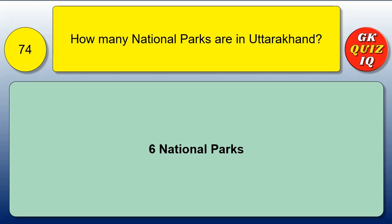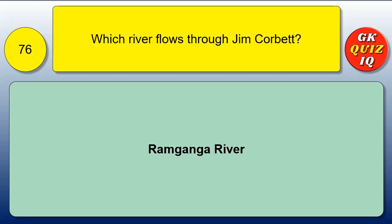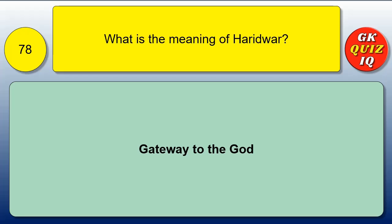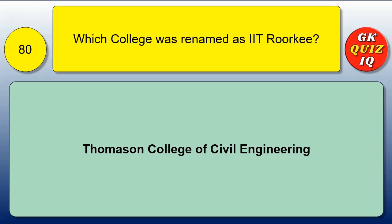How many national parks are in Uttarakhand? Six national parks. Which is the largest national park in Uttarakhand? Gangotri National Park. Which river flows through Jim Corbett National Park? Ram Ganga River. Who is India's individual Olympic gold medalist born in Dehradun? Abhinav Bindra. What is the meaning of Haridwar? Gateway to God. When is Uttarakhand Day celebrated? 9th November. Which college was renamed as IIT Roorkee? Thomason College of Civil Engineering.